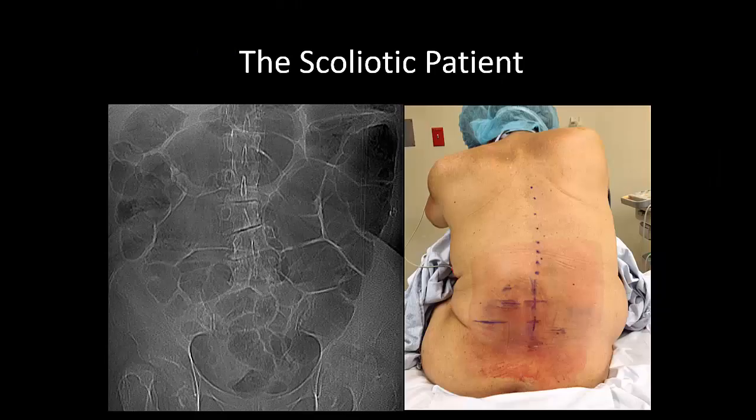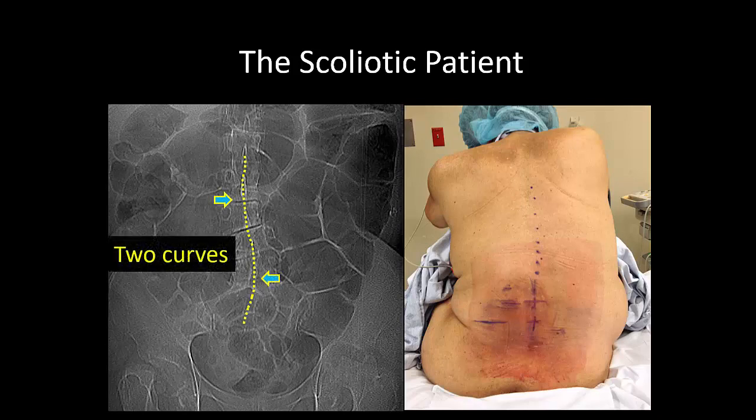The first thing to remember about the scoliotic patient is that the deformity is usually S-shaped, and there are therefore two curves. The thoracic one is usually the most obvious, but remember that the lumbar curve is likely to be in the opposite direction.